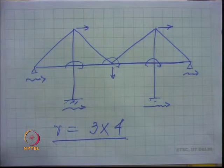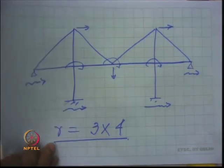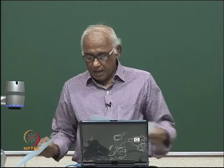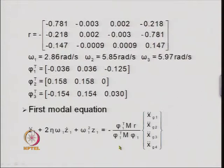The stiffness matrix K for the three degrees of freedom is a 3 by 3 matrix, and the mass matrix is again a 3 by 3 diagonal mass matrix. The R matrix already obtained for this cable-stayed bridge is a 3 by 4 matrix. The three frequencies obtained for this structure were omega 1, omega 2, and omega 3.